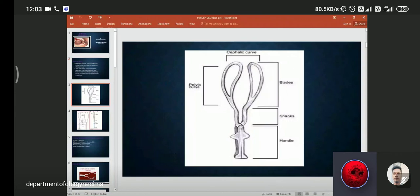This is the structure of forceps. You can come and see it is available in our department. It has a handle, then shaft and blade, and it has got two curves. One is cephalic curve that is inside of the blade, and the pelvic curve that is outside of the blade. The cephalic curve is around the fetal head and pelvic curve lies in the pelvis of the mother.